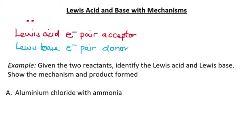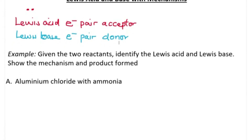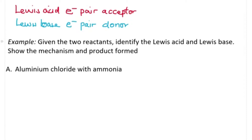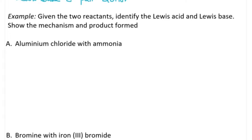We're going to focus on three examples. First, given the two reactants in each scenario, identify the Lewis acid and Lewis base. Second, show the mechanism and products formed if possible. The first example is aluminium chloride, written in condensed structure as Al with three chlorides, reacting with ammonia.